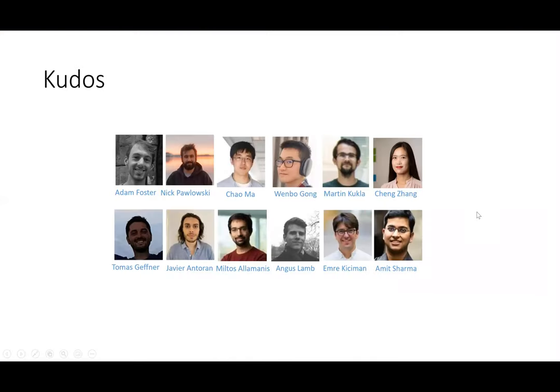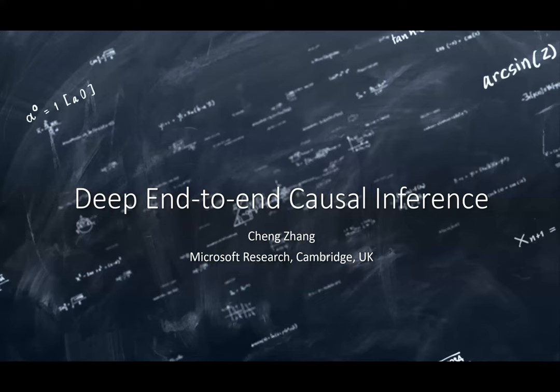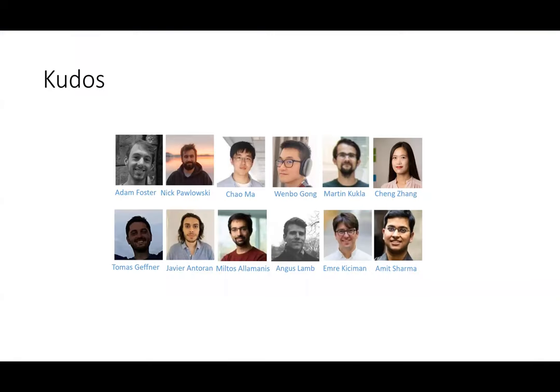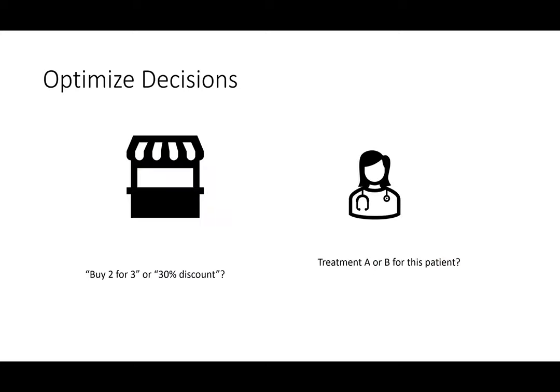Today she's going to tell us about deep end-to-end causal inference, which combines generative models, causal inference, and causality. Thank you for the introduction. Today I'm going to talk about deep end-to-end causal inference — that's one of our team's recent works. This is joint work by everyone listed here, so now let's get started. If you have any questions, just unmute yourself and shout — I cannot see the chat window for now.